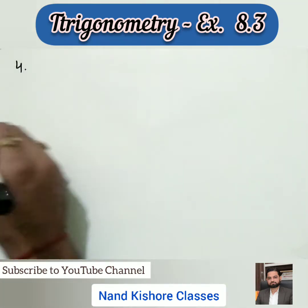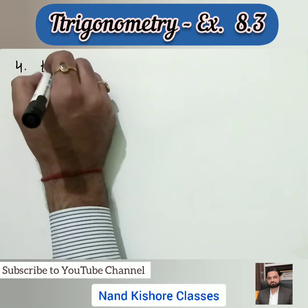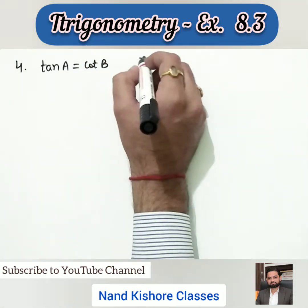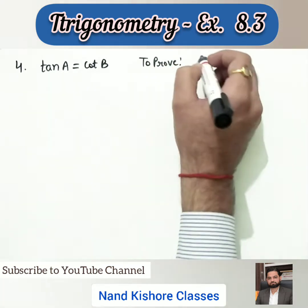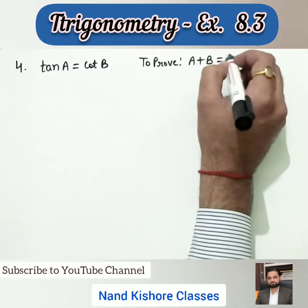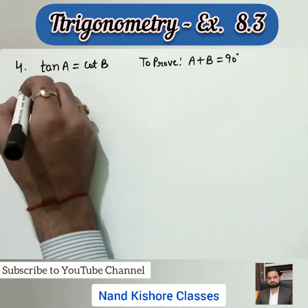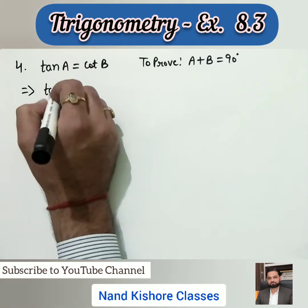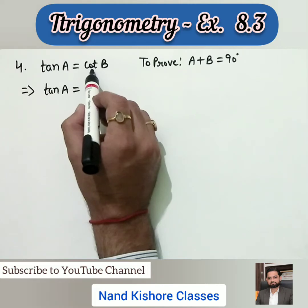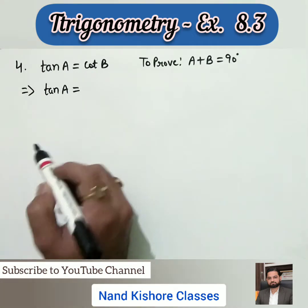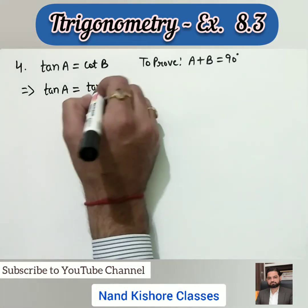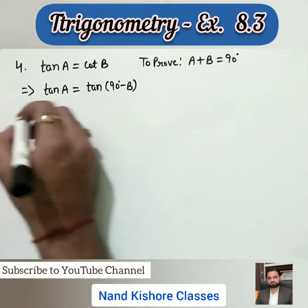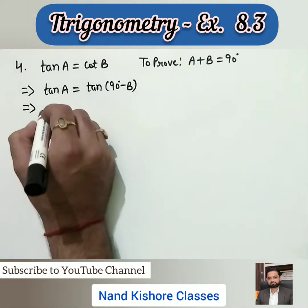Question number four: tan(a) is given equal to cot(b). We want to prove that a + b = 90°. Both sides must have the same trigonometric ratio. On the left side we have tan(a), and on the right side we have cotangent. Let us convert cotangent into tangent: we can write cot(b) as tan(90° - b), since tan(90° - b) = cot(b). Now both sides have tangents.